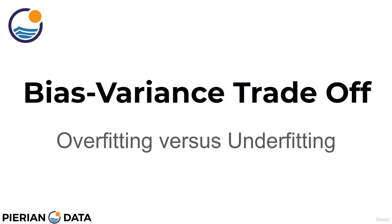Welcome back everyone to this lecture discussion on the bias-variance trade-off, which is also known as overfitting versus underfitting a model. Keep in mind that this is actually an important topic across all supervised machine learning algorithms, not just polynomial regression. It just so happens that when we encounter polynomial regression, it's the first time we actually have to consider a model of high variance versus a model of high bias. So let's talk about what that means.